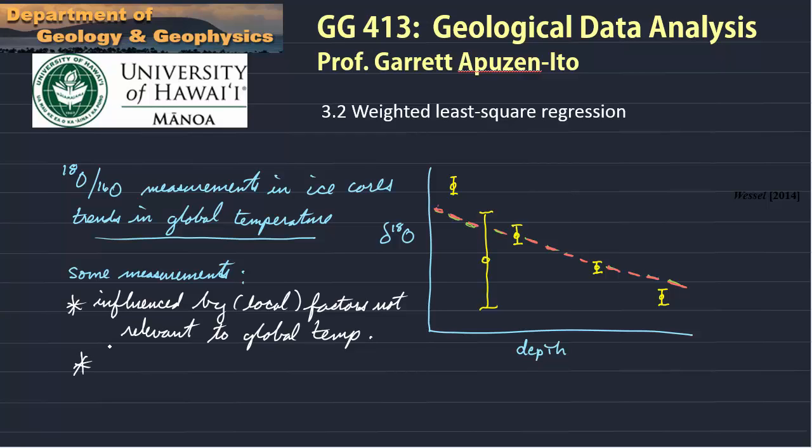And other measurements may simply have larger uncertainties or errors. So in the diagram I've shown you, one measurement has a much larger error than the others. So the point is we want to base our regression on the more reliable estimates.